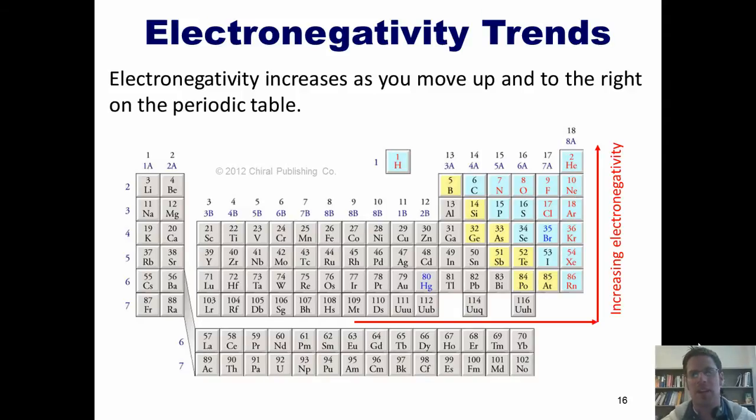Thus, the most electronegative element on the periodic table is fluorine, number 9, and the least electronegative is francium, number 87.